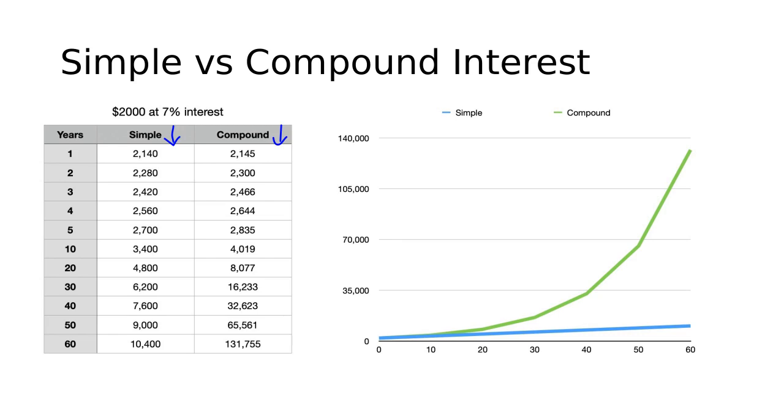We can see that after one year, the money invested at simple interest is worth $2,140. The money invested using compound interest is worth $2,145. Not a huge difference at this point. The money invested using compound interest has grown a little faster, but not a whole lot, and that's reflected in the graph.